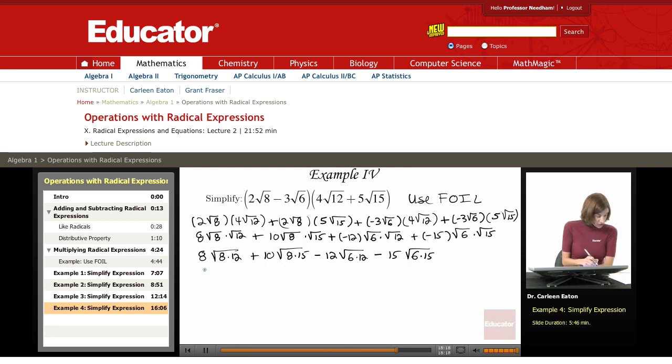Doing some multiplication: 8 times 12 is 96, plus 10, 8 times 15 is 120, 6 times 12 is 72, and 6 times 15 is 90.